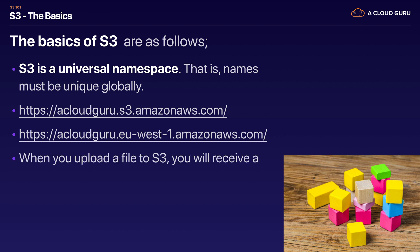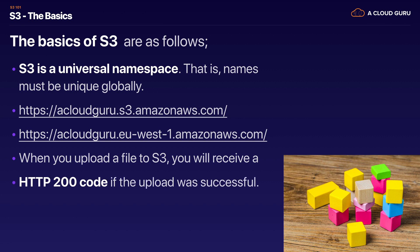When you upload a file to S3, you're going to receive an HTTP 200 code if the upload was successful, and that's going to come back to your browser. That can be a very popular exam topic. So if you have a scenario question about uploading a file to S3 and it asks what code you receive back, it's an HTTP 200 code.